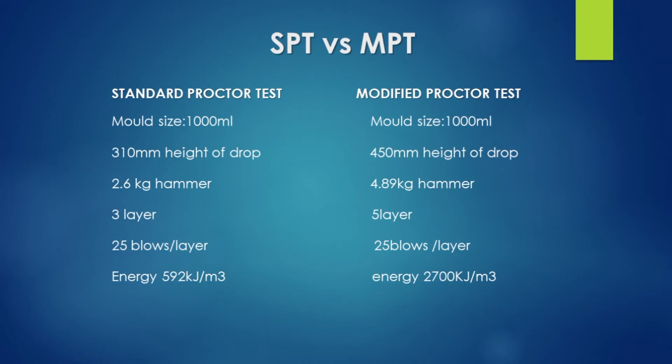The modified process adds 25 blows per layer. The standard energy level is 592 kJ per cubic meter. The modified process energy level is 2700 kJ per cubic meter.